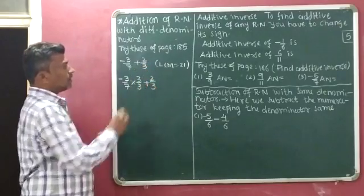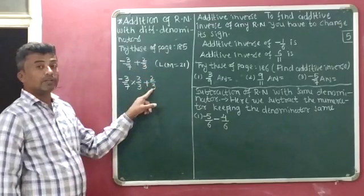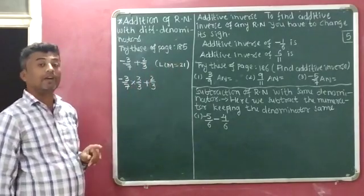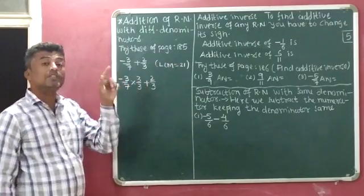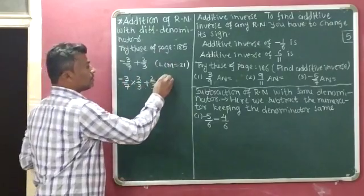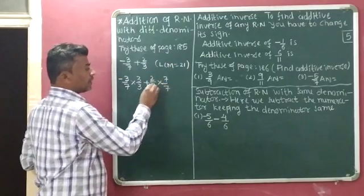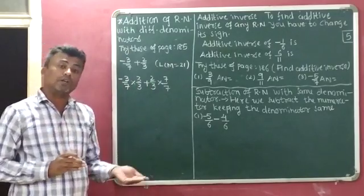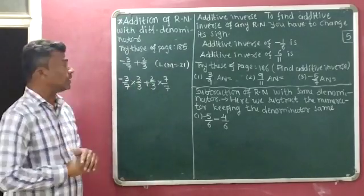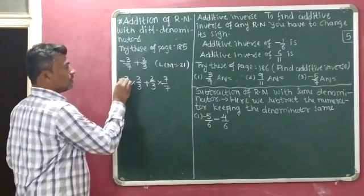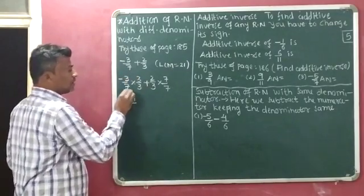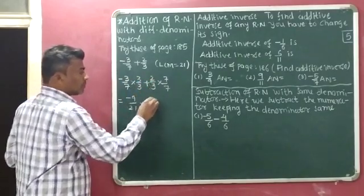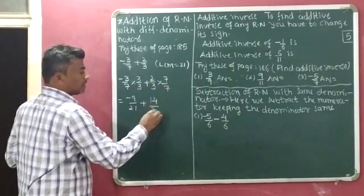The next number is 2 by 3. Here the denominator is 3. We multiply 3 by 7 to get our LCM of 21. So we multiply both the numerator and denominator by 7. This gives us: minus 3 times 3 equals minus 9, and 7 times 3 equals 21; then plus 2 times 7 equals 14, and 3 times 7 equals 21.